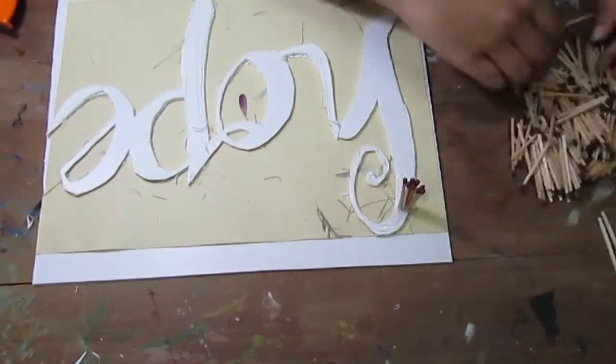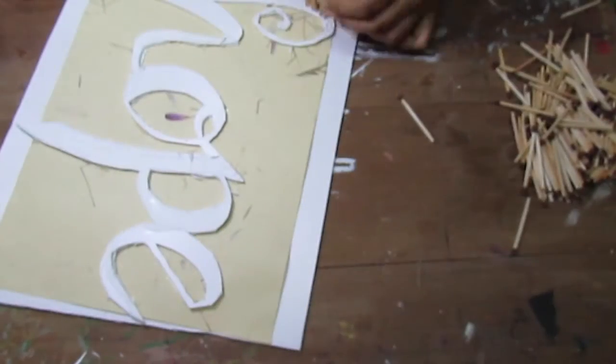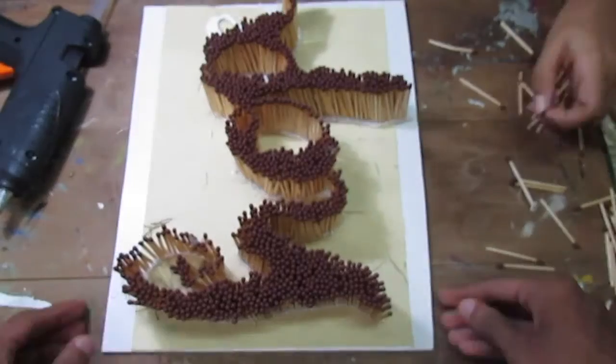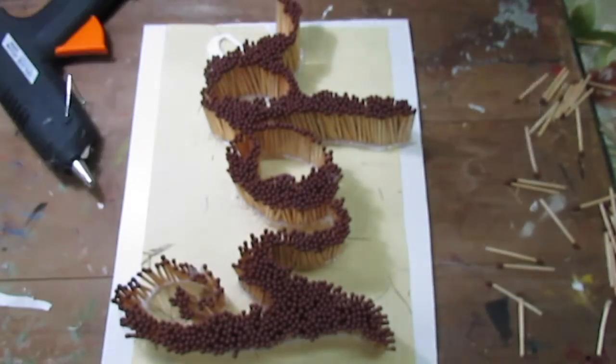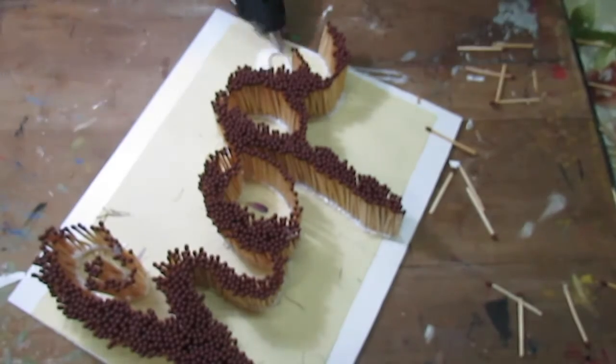Once that's done I started sticking the matchsticks onto the letters with my glue gun. I tried my best to keep them aligned so they'd be stuck together and would look uniform.